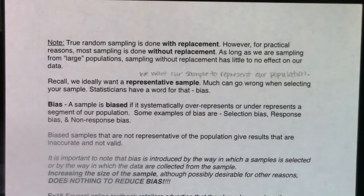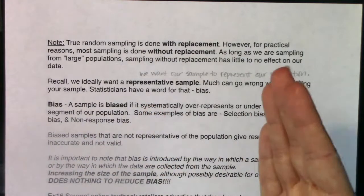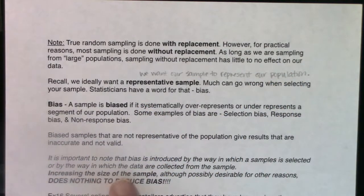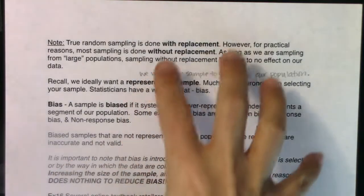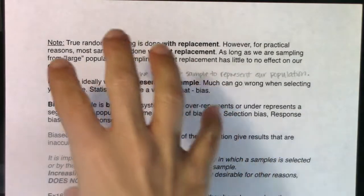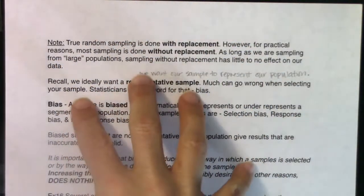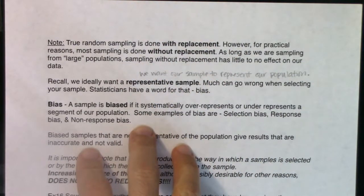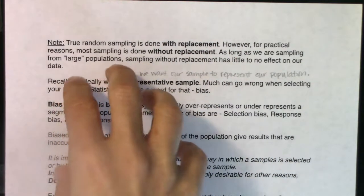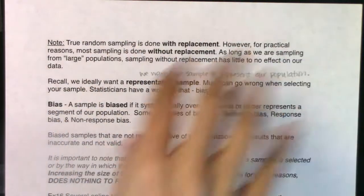If your sampling method has bias in it, doing more of that bad thing won't fix the bad thing. You've got to make sure that the system you have in place — your stratification, your SRS, your clustering — is getting you a representative sample. If you don't have a representative sample, you're going to have a bad statistic. You'll generalize that bad statistic to your population, and it's not going to work.